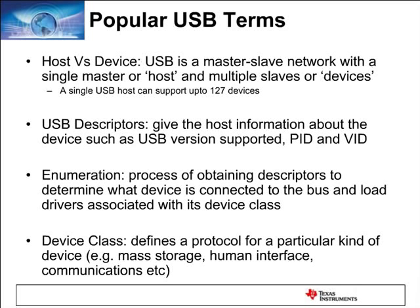USB descriptors are files that give the host information about the USB device, such as the USB version it supports, the product ID and vendor ID. The vendor ID is supplied by the vendor to identify the device. For example, a VID on an Apple device would show up as 'Apple,' and a product ID would show up as the product line — so your Apple Nano would have a VID of Apple and a PID of Nano.